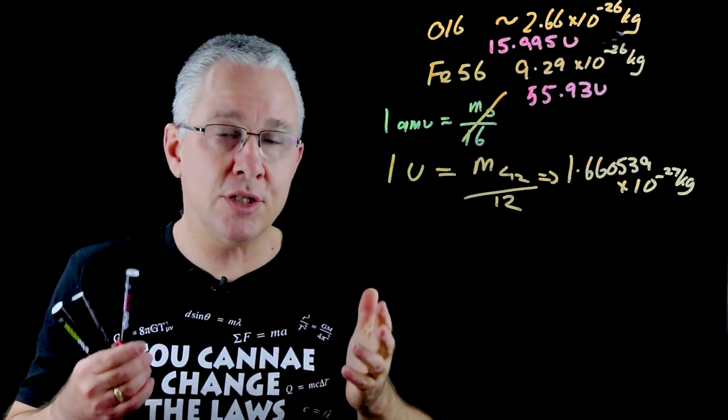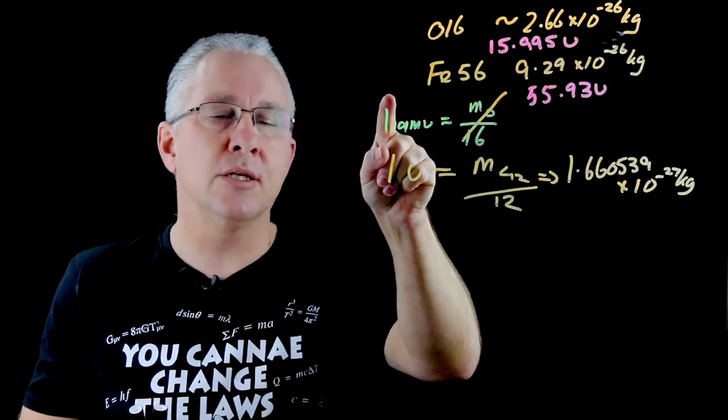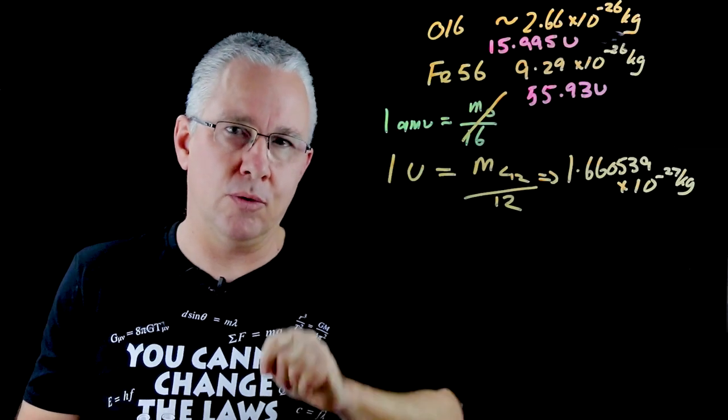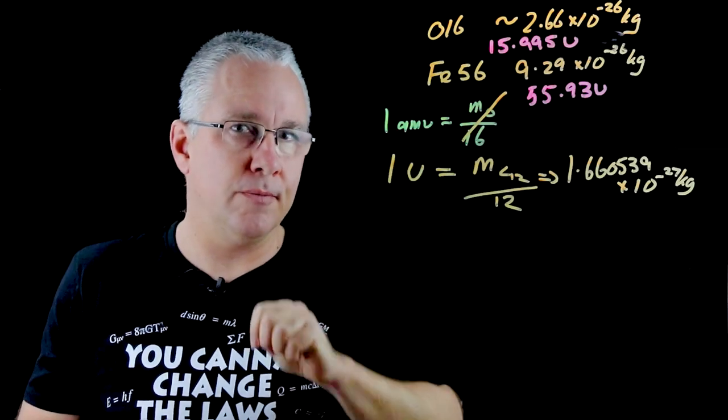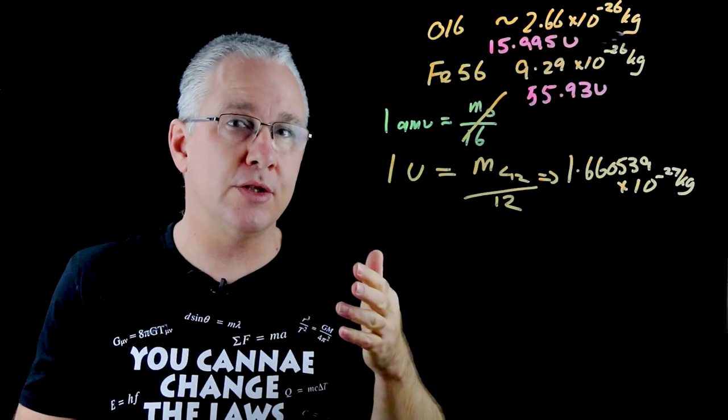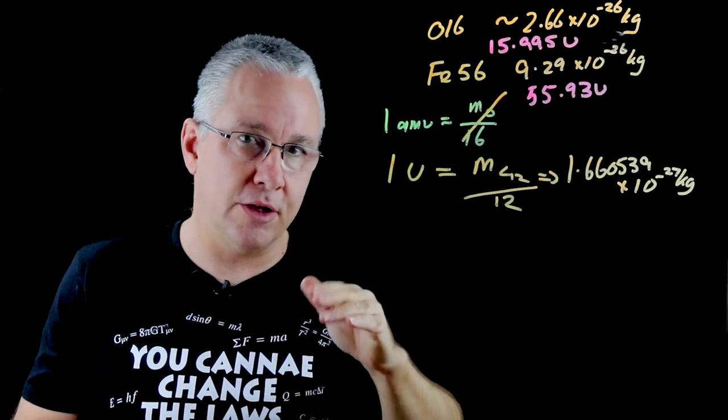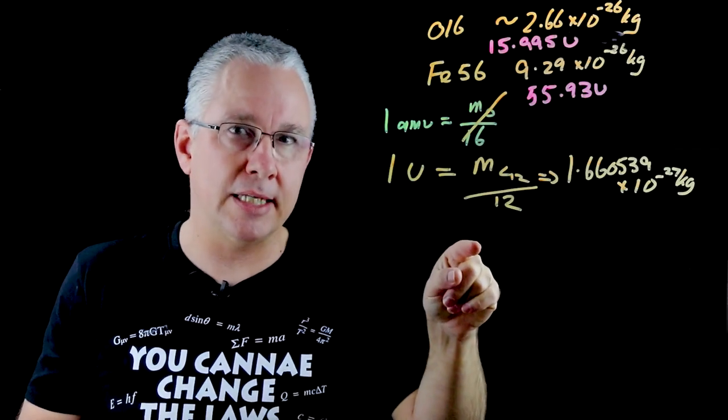But before I go on, just a small point of caution. You'll find a number of old texts still referred to as the 1amu as opposed to the u. But the thing is is that the amu is actually referring to the atomic mass unit based on the oxygen atom, whereas the u, the unified atomic mass unit, is based on the carbon atom.